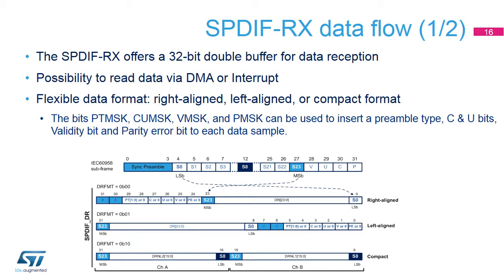The SPDIF-RX offers a 32-bit double buffer for data reception. The application can read the received data using DMA or interrupts. Various data formats are available: right-aligned, left-aligned, or compact format. The compact format can be interesting when the SPDIF-RX is receiving encoded audio frames. In addition, the SPDIF-RX can insert a preamble type, C and U bits, validity bit, and parity error bit with each audio sample. Using the mask bits, the user can select which information will be provided.